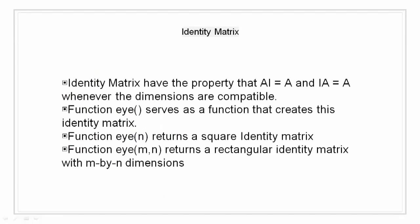Identity Matrix. Identity Matrix is the one having 1s on the main diagonal and 0 elsewhere. These matrix have property that A times I is equal to A and I times A is equal to A whenever the dimensions are compatible. Identity Matrix is like the number 1 of matrix world. Like we do 2 into 1, we get 2. 3 into 1, we get 3. Similarly, when we multiply a matrix with the Identity Matrix, we get the matrix itself.